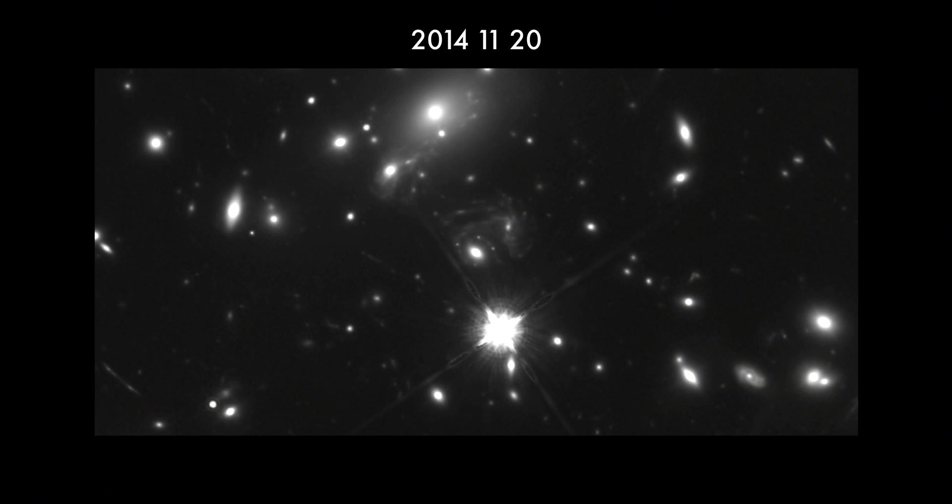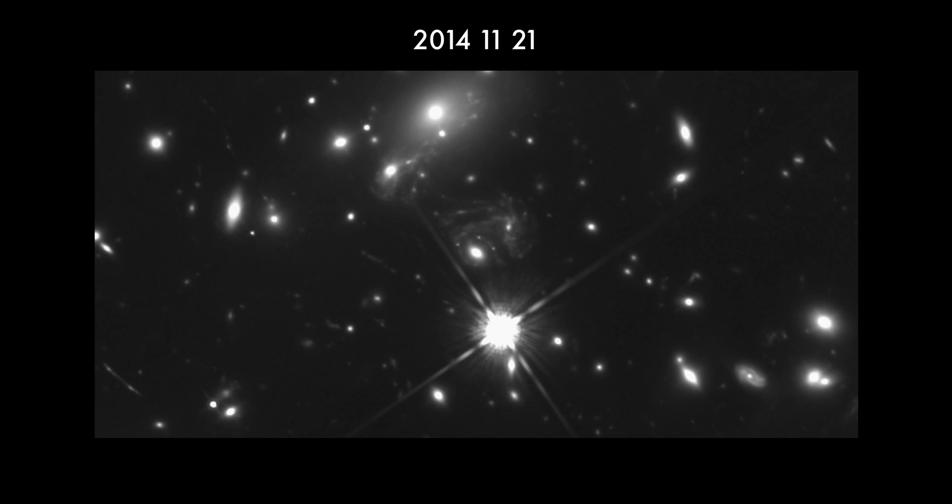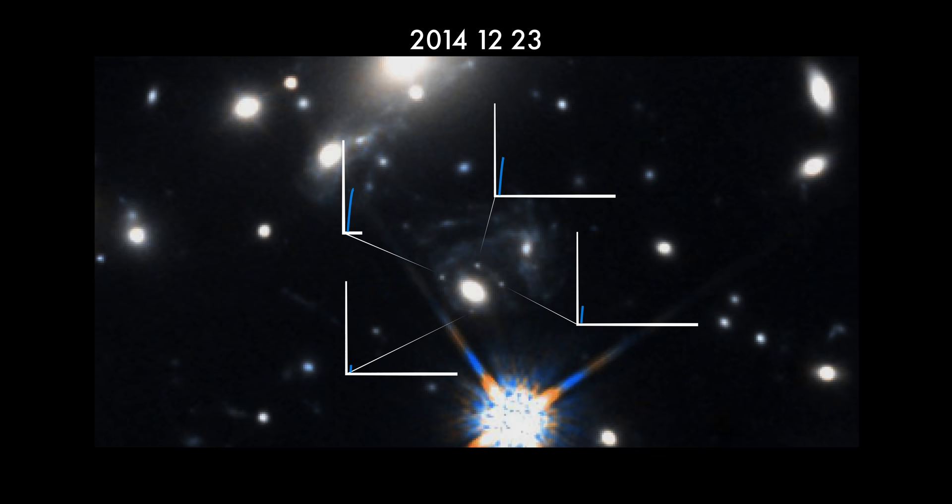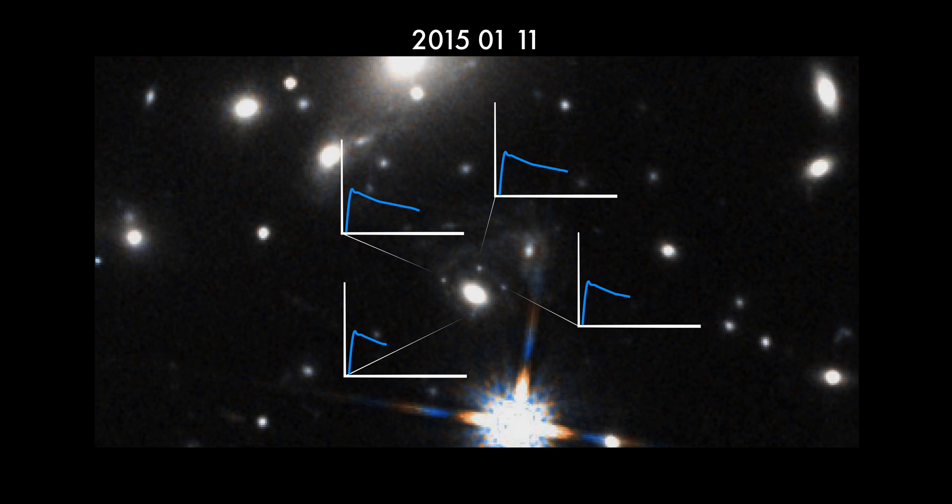Not only did the supernova appear at four different places, the images also appeared at different times. Relative to the first image, the others were delayed by periods ranging from five days to over three weeks. And we could measure this time delay because of the distinctive light curve of the supernova. Some of the images of the explosion were further along in their light curve than others.